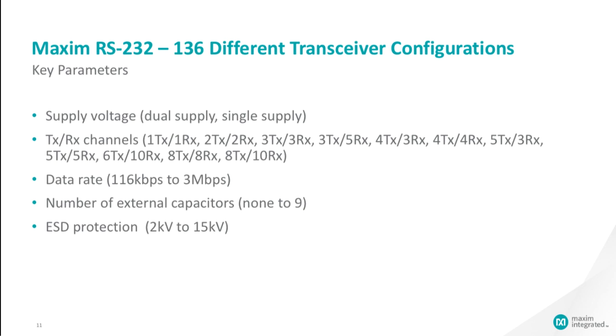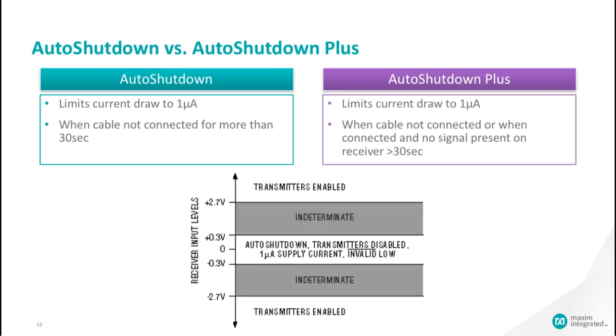Maxim RS-232 can have 136 different transceiver configurations. The auto shutdown feature limits current draw to one microamp when the cable is not connected. The receiver input voltage would be between minus 0.3 volts and plus 0.3 volts for more than 30 seconds.